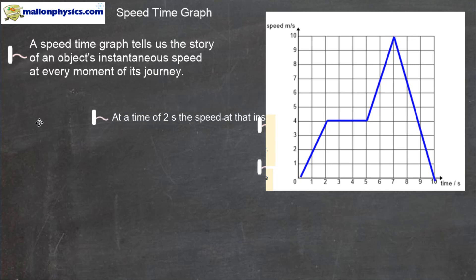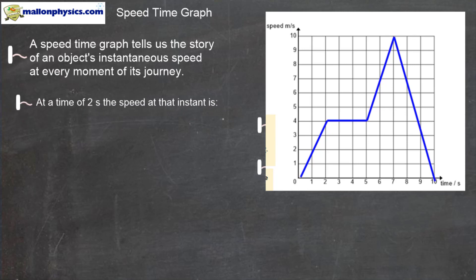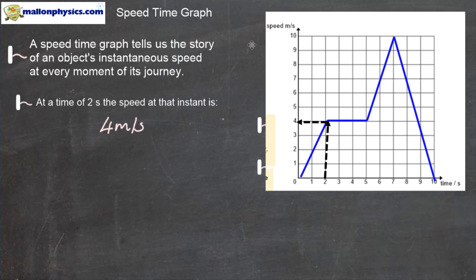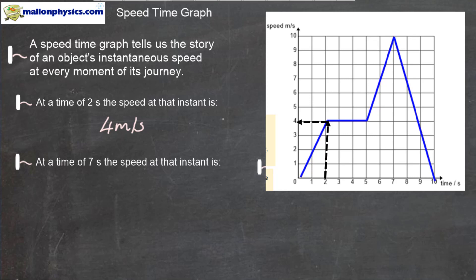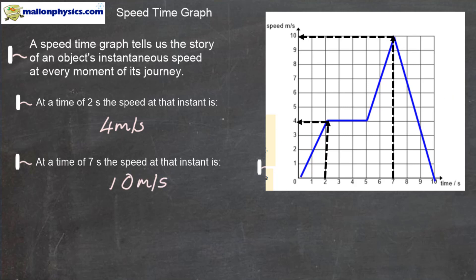For example, if I want to find the instantaneous speed of that object two seconds into its flight, I would look at the graph, find two seconds, read up and read across, and I would see that the instantaneous speed at two seconds was four meters per second. I could go to any other part of that flight — for example, seven seconds — go to seven seconds, read up to the graph, and read across, and I would see that the instantaneous speed at seven seconds was ten meters per second. A speed-time graph is a great visual way to see how the speed of an object is changing.